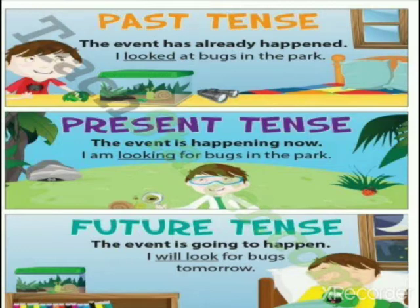Past — jo beet gaya. The event has already happened. Future — abhi upcoming hai, aane wala hai. The event is going to happen.